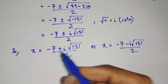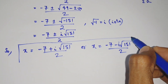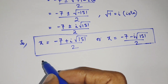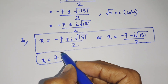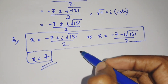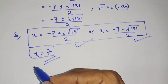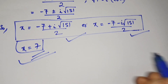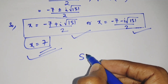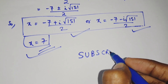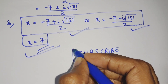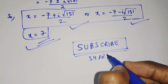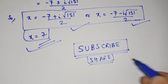These are the two complex solutions, and one more solution was x equals 7, which we found previously. This can also be done by trial and error: take x equals 7 as one solution, then factorize by long division method to get x minus 7 into x squared plus 7x plus 50 equals to 0, from which we can also solve the equation. Subscribe to my channel and share this video for more such content. Thank you.